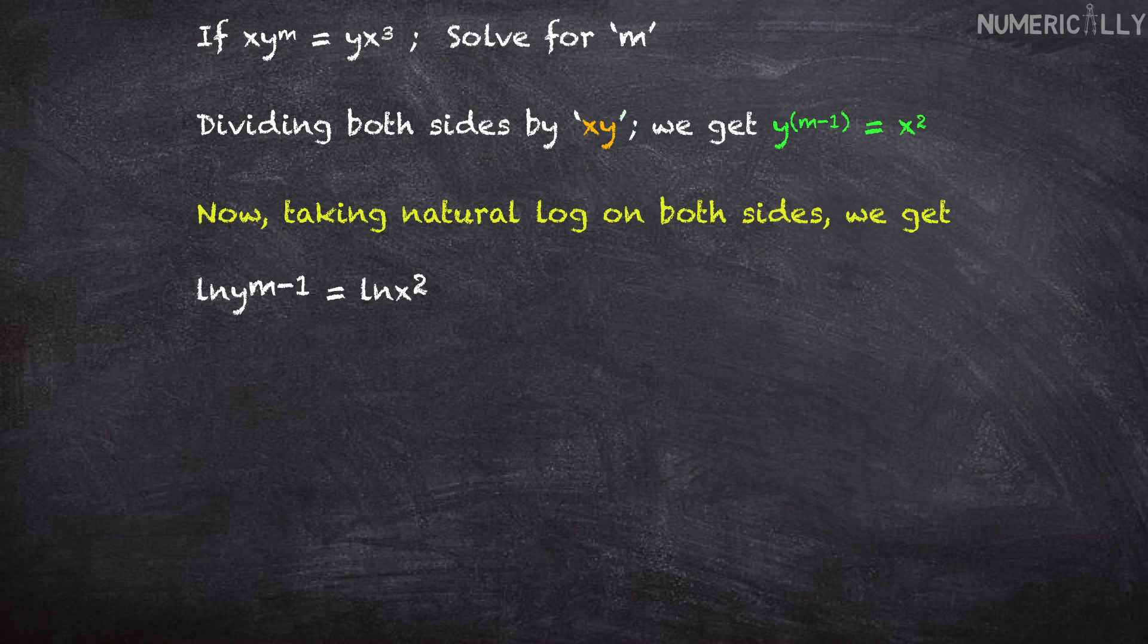ln y to the power m minus 1 equals ln x squared, which implies m minus 1 times ln y equals 2 ln x, which implies m ln y minus ln y equals 2 ln x.